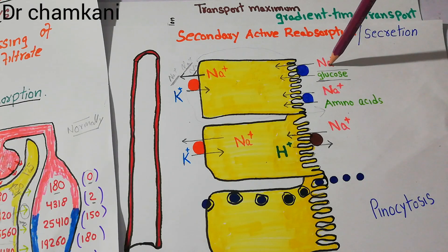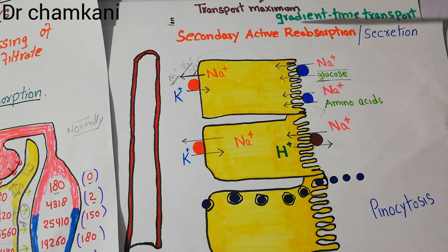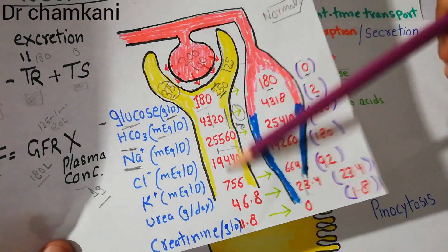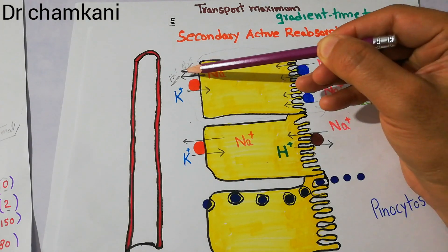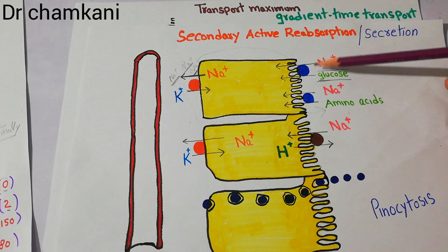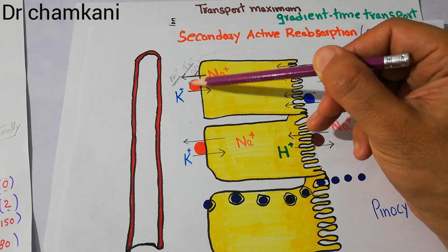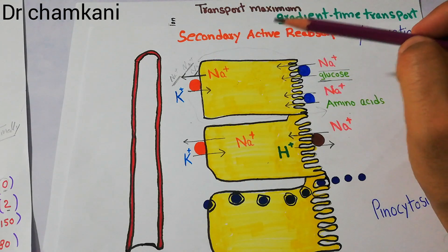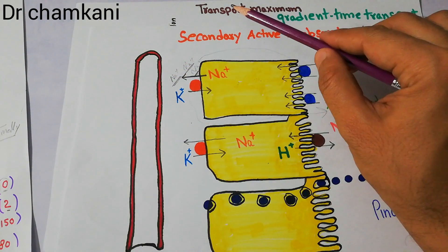There are some substances — for example sodium — which are reabsorbed actively yet still do not show transport maximum. This is because the reabsorption of sodium from the tubular lumen into the blood occurs via sodium-potassium pumps on the lateral surface. This pump throws sodium out of the cell, decreasing intracellular sodium so that more sodium from the tubular lumen enters the cell — it is an active process. However, this reabsorption of sodium from the tubular lumen into the interstitial space does not follow transport maximum.